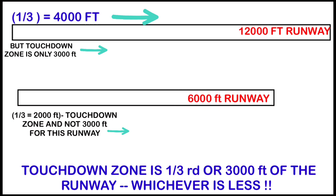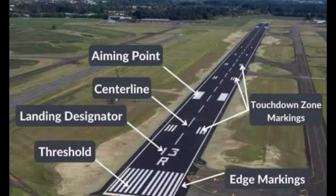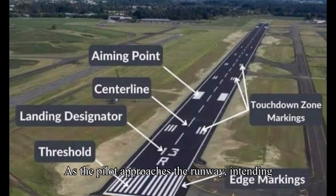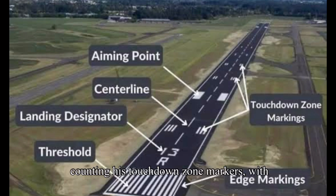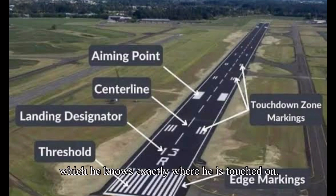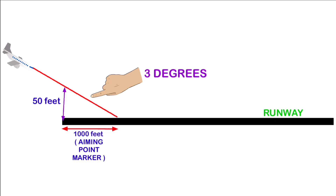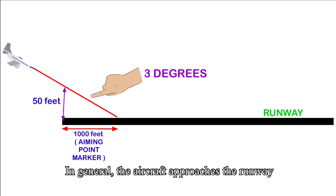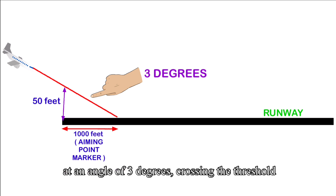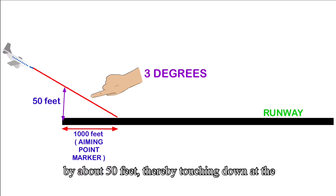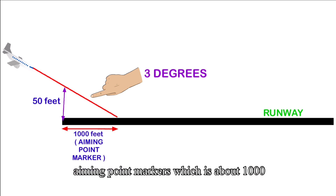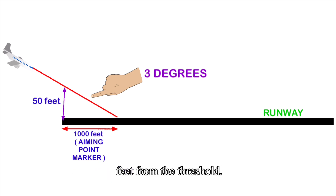Starting from the threshold, there are six markers at 500-foot intervals, making 3000 feet in total. The touchdown zone is defined as one third of the total runway length or the first 3000 feet, whichever is lesser. As the pilot approaches the runway intending to land at the aiming point marker, he counts the touchdown zone markers to know exactly where he has touched down. In general, the aircraft approaches at an angle of three degrees, crossing the threshold at about 50 feet, and touching down at the aiming point marker approximately 1000 feet from the threshold.